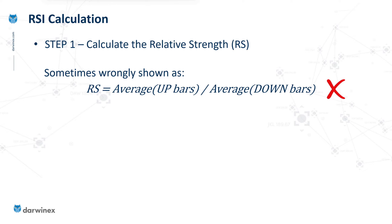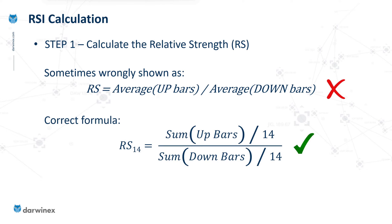I've seen that the relative strength is the average of the up bars divided by the average of the down bars — this is not the case. This suggests, as an example, if we're using 14 periods for RSI, that if there are six up bars we divide the total upwards move by six, and that would leave eight down bars and we'd divide the total down move by eight. That is not correct. The correct formula is this: for an RSI using 14 periods, we should divide the sum of the up bars by 14, and likewise for the down bars. The relative strength is simply the ratio of those two values. You might also notice that these two denominators of 14 would actually cancel each other out, so we can get this relative strength simply by taking the sum of the up bars and dividing by the sum of the down bars. The key point is it's not the average of the individual up bars and down bars.